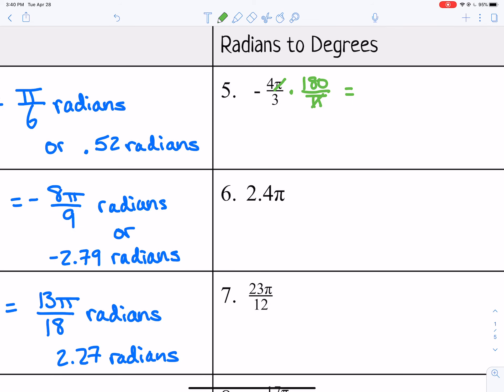Then you can multiply what's left. So you get negative 4 times 180 in your numerator divided by 3. Negative 4 times 180 divided by 3, I can see that 180 divided by 3 would be 60, so negative 4 times 60 would just give me negative 240 degrees.